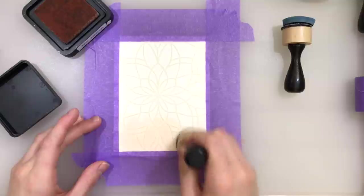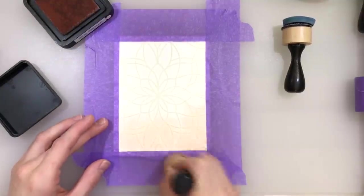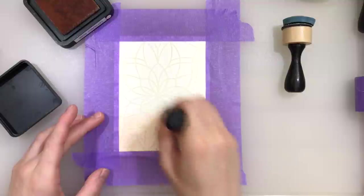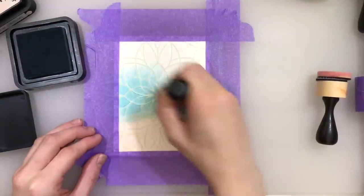I started off by using some distress inks and I'm going to ink blend these three colors which are Tattered Rose, Broken China, and Chipped Sapphire onto the paper that is covered with a stencil.